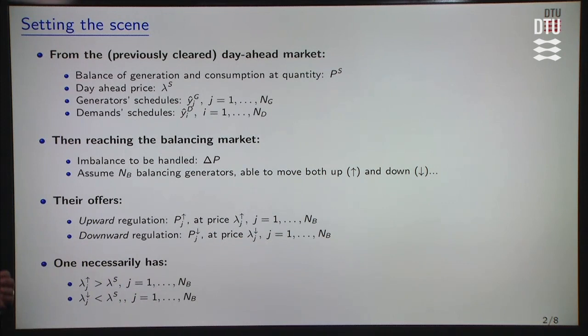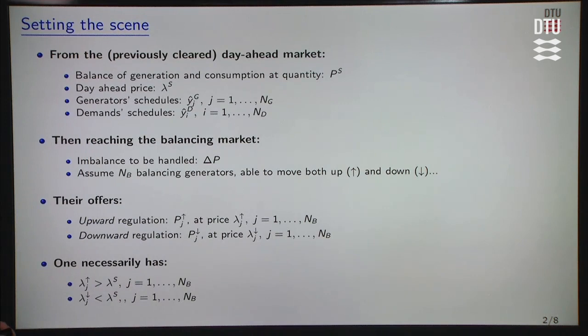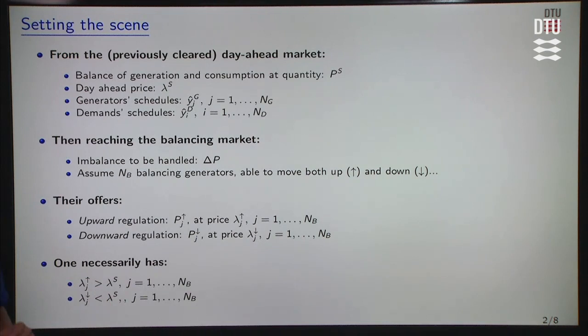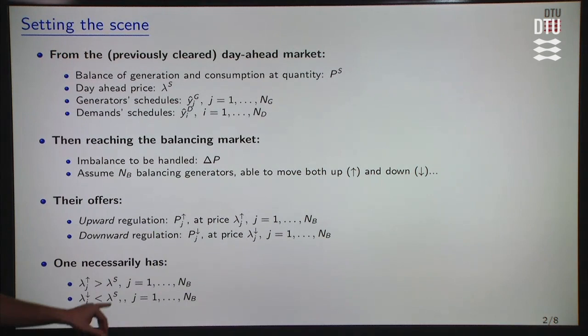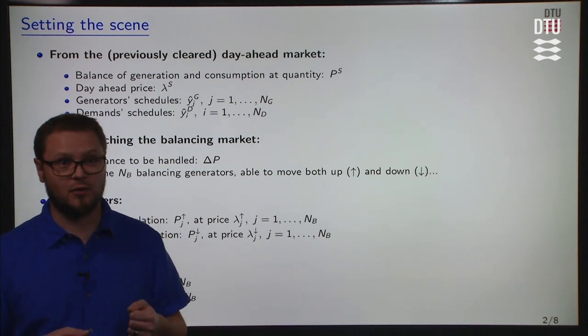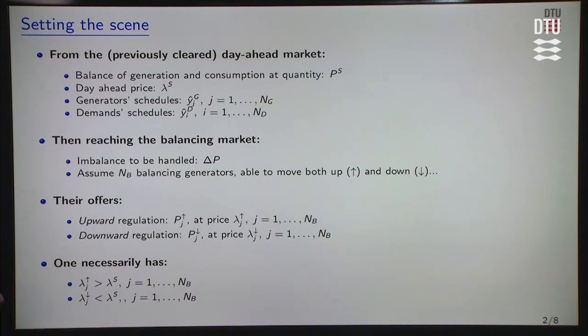We necessarily have offers for upward regulation at a price that is higher than the day-ahead price. Otherwise, this unit might as well have been scheduled in the day-ahead market, as they would have made more money than by waiting for the balancing stage. Similarly, for downward regulation, these units are going to sell back energy to the system. If they got paid at price lambda_s, when they sell back they want to sell at a price lower than lambda_s so that they make a revenue — otherwise they would lose money. So all offers for downward regulation are expected to be at a price lower than the day-ahead market price.